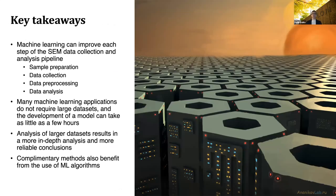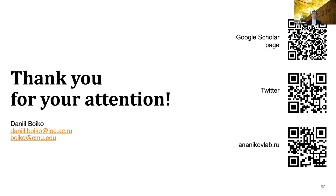So here are the key takeaways. Machine learning can be used to improve each step of the electron microscopy data collection and analysis pipeline. Many machine learning methods do not require a large dataset — there were examples where we used only 10 labeled images. Of course, it requires some changes to the code to make it work better, but you don't need 1,000 images to do that. You can perform analysis of large datasets, which will probably result in more in-depth analysis and better conclusions. And finally, complementary methods such as mass spectrometry also benefit from the use of machine learning algorithms. Thank you for your attention. I will be happy to answer questions.